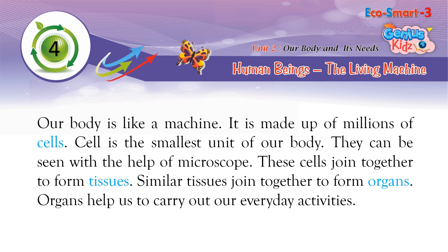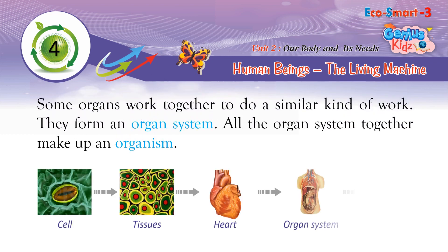Our body is like a machine. It is made up of millions of cells. A cell is the smallest unit of our body, and they can be seen with the help of a microscope. These cells join together to form tissues, and similar tissues join together to form organs. Organs help us carry out our everyday activities. Some organs work together to do a similar kind of work and form an organ system. All organ systems together make up an organism.